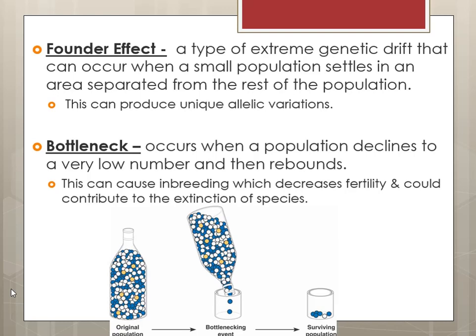Founder effect and bottlenecking are connected to each other. Founder effect is an extreme genetic drift that occurs when a small population settles in an area separated from the others, which ties into speciation. This can produce unique allelic variations — with a small separated population, there's less gene flow, the number of genes available is smaller, and sometimes you see recessive traits or random recessive mutations pop out.